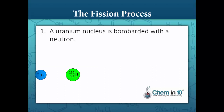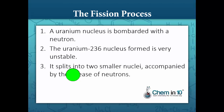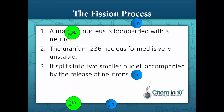In this example of induced fission, a uranium nucleus is bombarded with a neutron. The uranium-236 nucleus that is formed is very unstable. Therefore, it splits into two smaller nuclei accompanied by the release of neutrons.